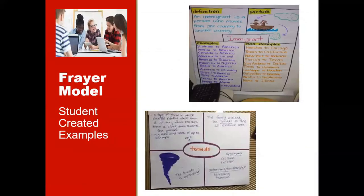While it is important to provide students with a graphic organizer when teaching and modeling the strategy, it is also important for students to create their own version to promote ownership once they are proficient with the strategy. Chart paper, index cards, notebooks, and sticky notes are all ways to engage students in creating their own Freyer models.